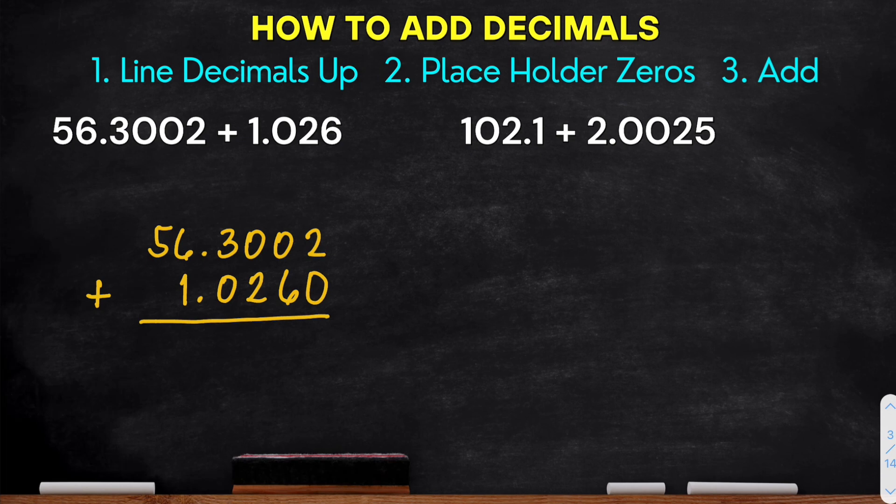And then, add the decimals. So starting at the right most, 2 plus 0, that is 2. 0 plus 6, we have 6. 0 plus 2, that is 2. Then 3 plus 0, we have 3. Then place the decimal point. 6 plus 1, that is 7. Then bring down 5. Okay. So the final answer would be 57.3262. Okay. Got it guys?